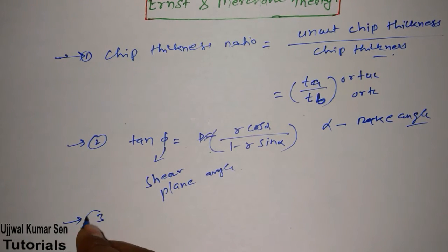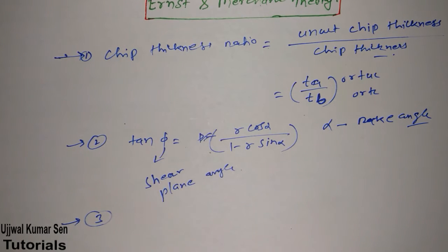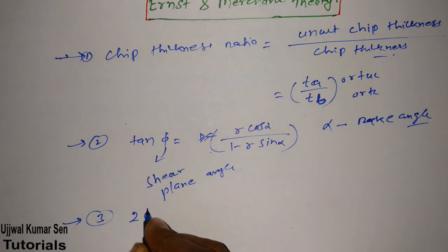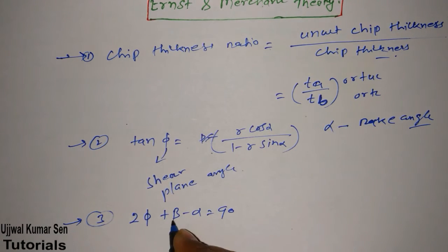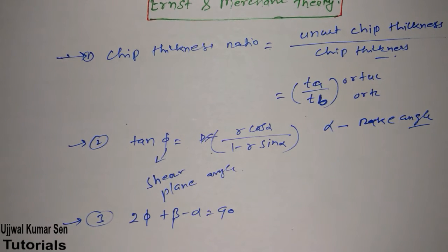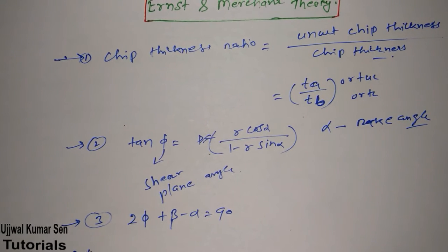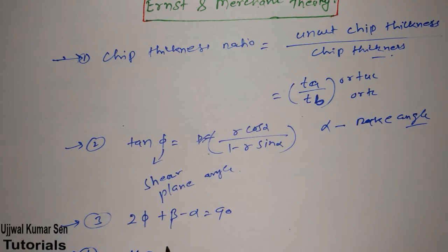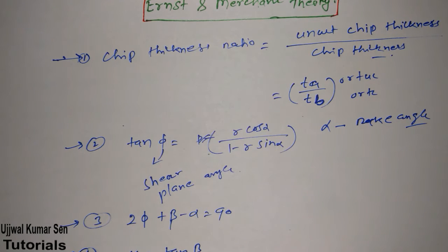There is another important formula known as Ernst-Merchant theory: 2φ + β − α = 90°. From this relation, if we have two angles we can find the third. The fourth formula is: coefficient of friction μ = tan(β). Using these equations, we can find whatever is unknown in a given question.